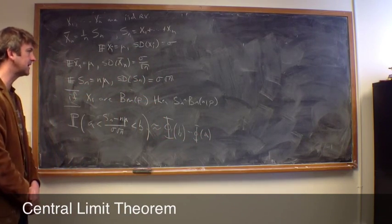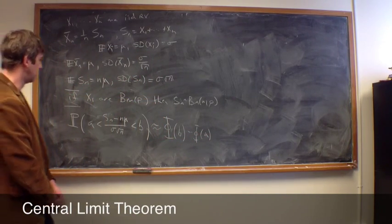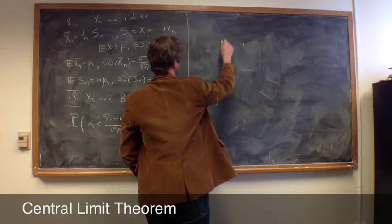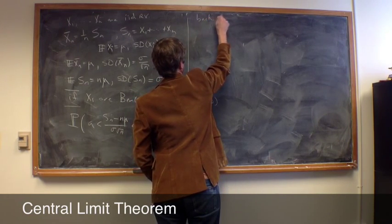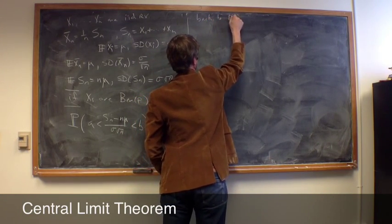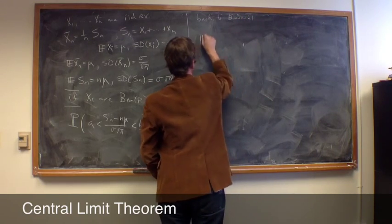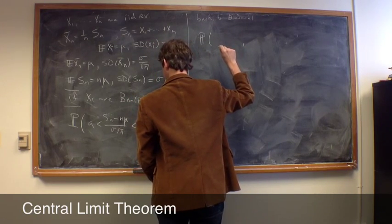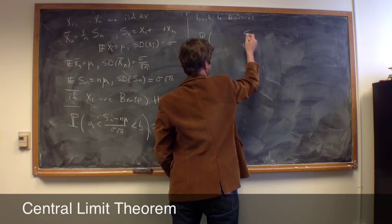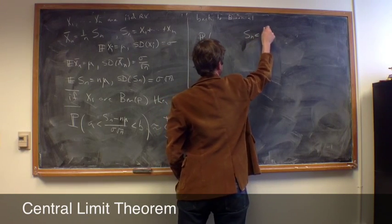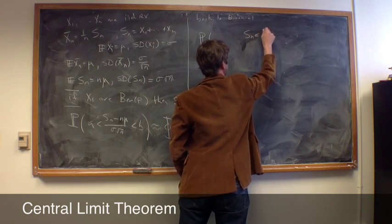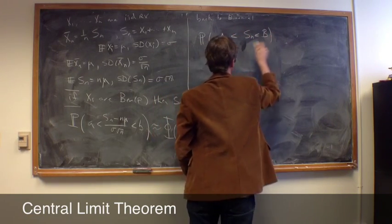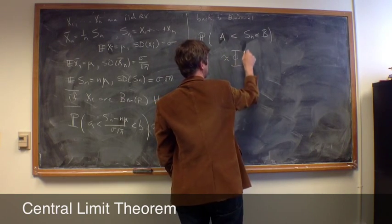But notice, this is exactly like what we had before. So, back to the binomial case, we had that this same object was approximately what we would get if we had taken, if we had asked for sn, if we had asked for sn less than b greater than a, then our binomial approximation said that this was approximately, well,